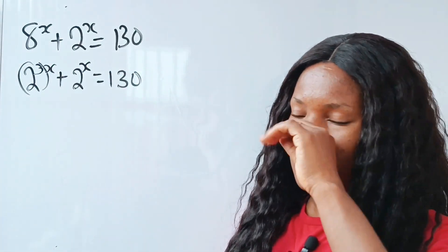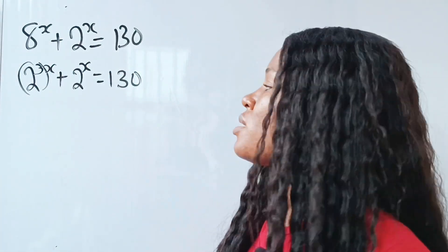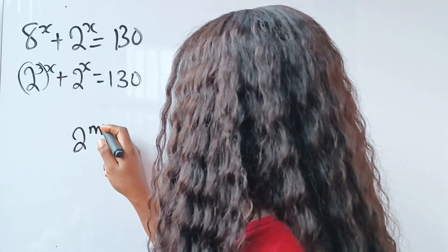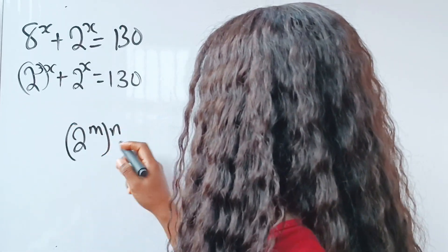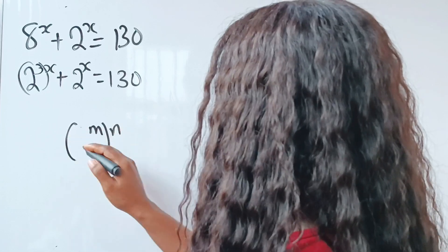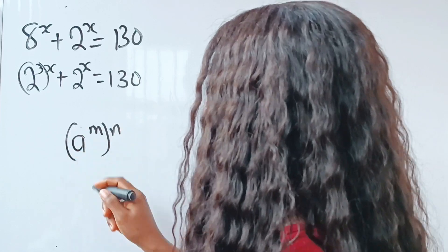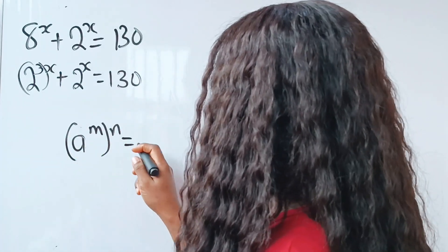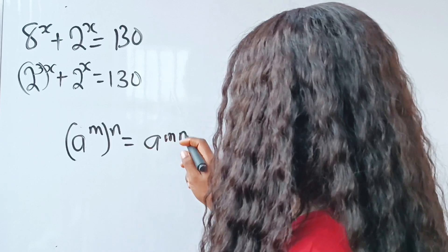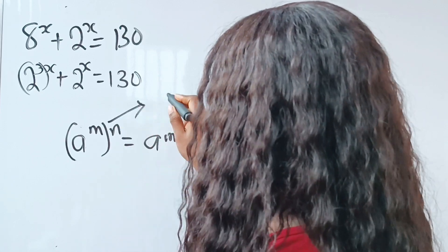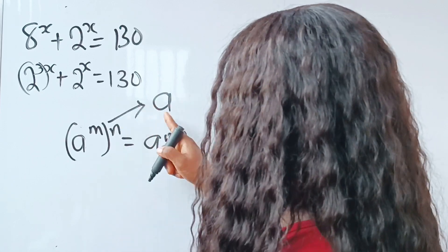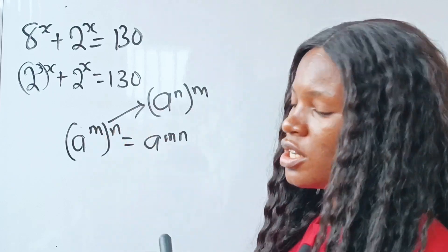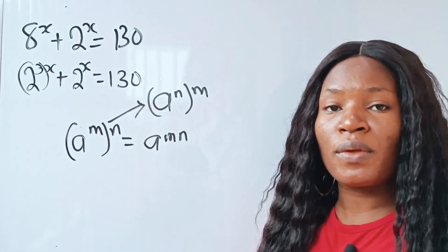Now I want us to recall this law of exponents — the law that states that a to the power of m raised to the power of n is equal to a to the power of mn. Also, when you have something like this, you can write it as a to the power of n raised to the power of m. So you can interchange the position of the powers.